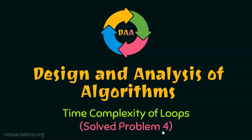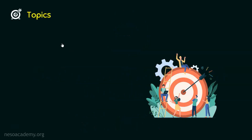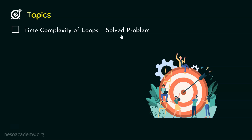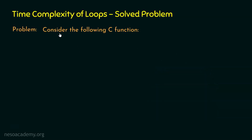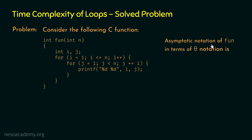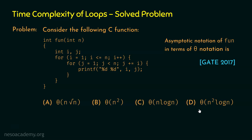Let's solve problem number 4 on Time Complexity of Loops. The topic of this presentation is Time Complexity of Loops Solved Problem. Let's proceed and see the problem first before solving it. Consider the following C function. We need to find the asymptotic notation of fun in terms of theta notation from the given options, and our job is to determine the correct option.